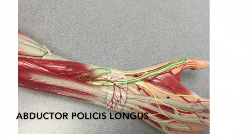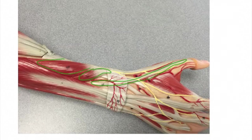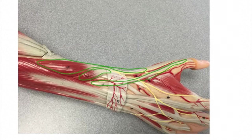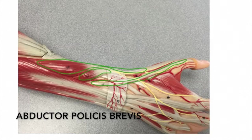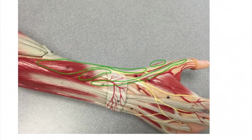Next we see the abductor pollicis longus. The origin is the interosseous membrane, the insertion is the trapezium and the 1st metacarpal, and the action is to abduct the thumb. Here we also see the abductor pollicis brevis: the origin is the tubercles of the scaphoid and the trapezium, the insertion is the proximal phalanx of the thumb, and the action is to abduct the thumb.